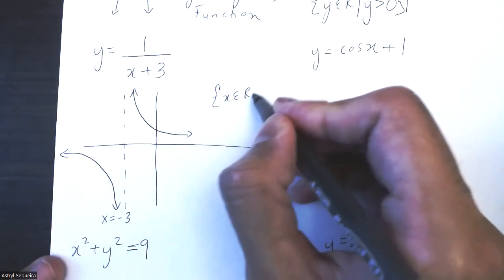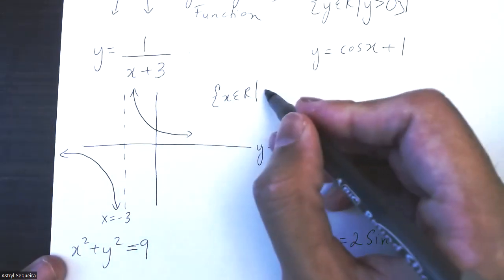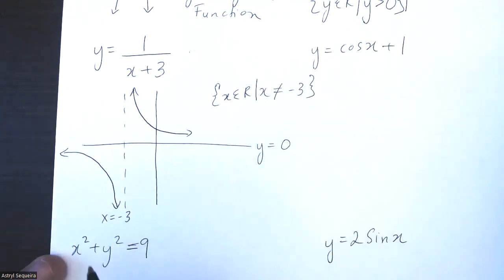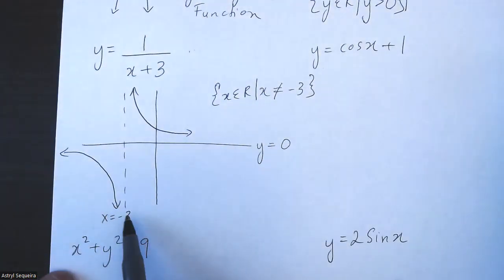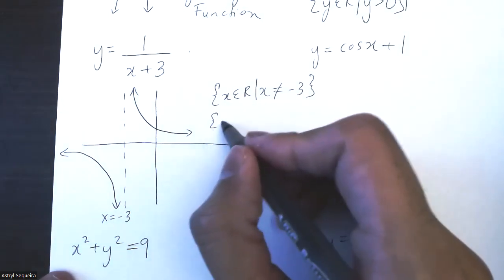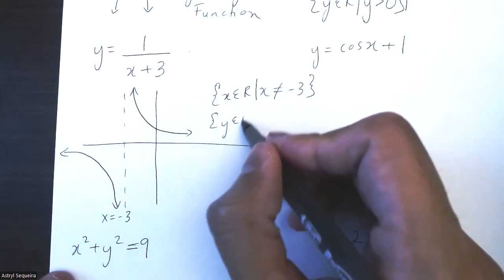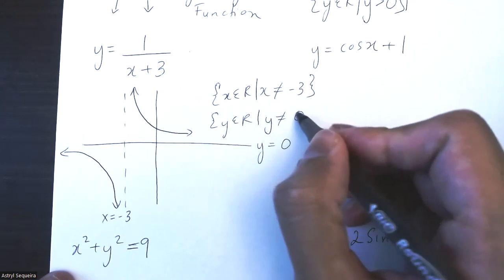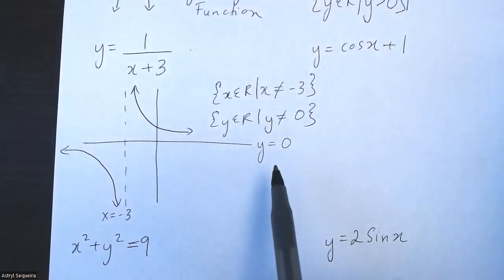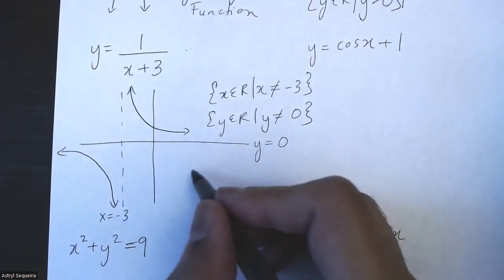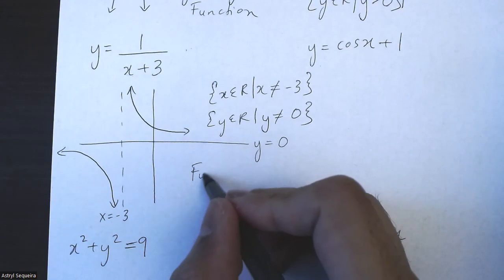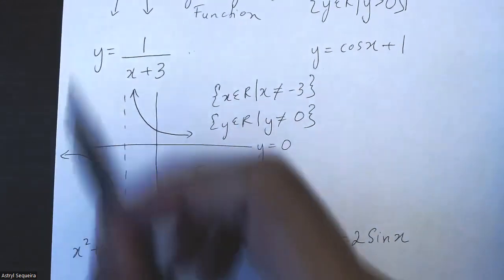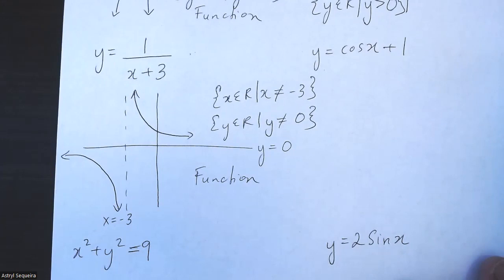For the domain, x is all real numbers such that x cannot equal -3, which is my vertical asymptote. For my range, it's very similar: y cannot equal zero, which is my horizontal asymptote. This is a function — all reciprocal equations are functions because they pass the vertical line test.